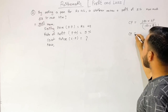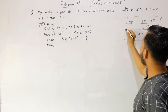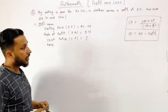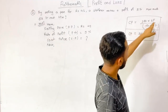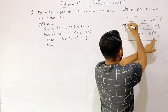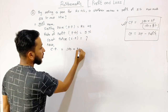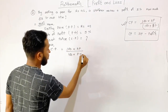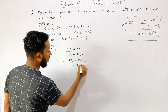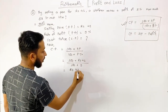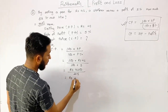The condition is CP equals SP minus profit. Using the formula CP equals 100 into SP by 100 plus profit percentage, we calculate: CP equals 100 into Rupees 42 by 100 plus 5 equals Rupees 4,200 by 105. Therefore, cost price equals Rupees 40.